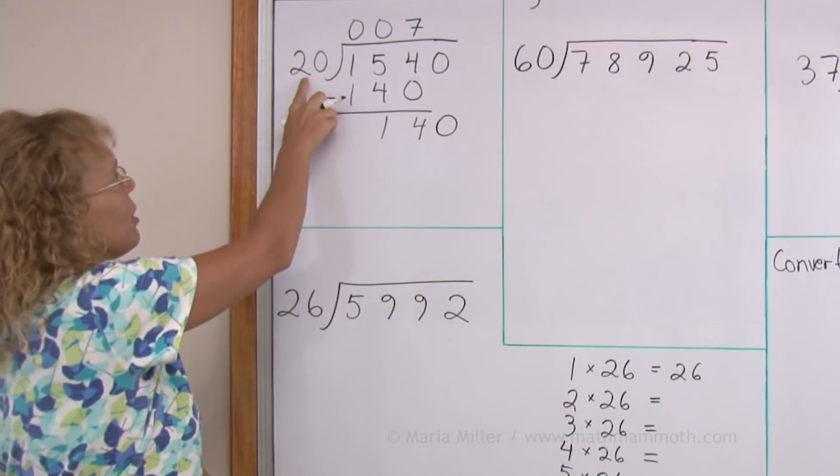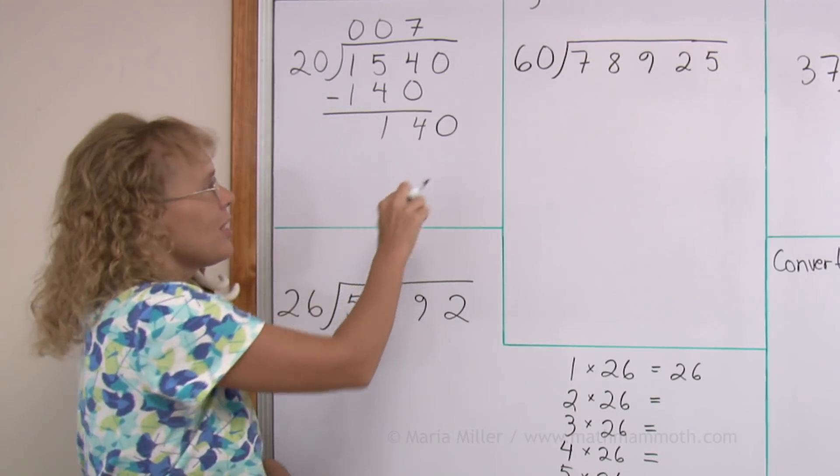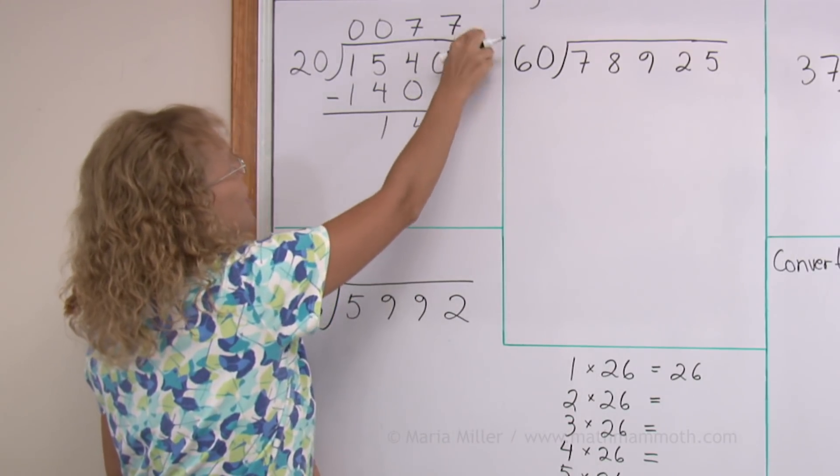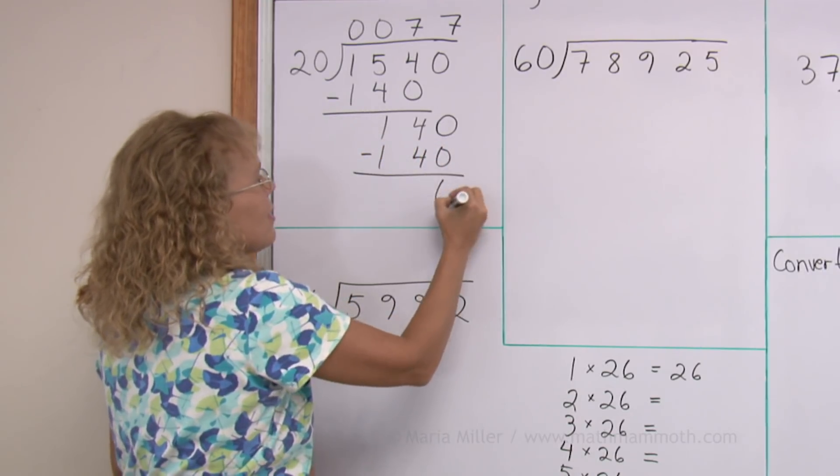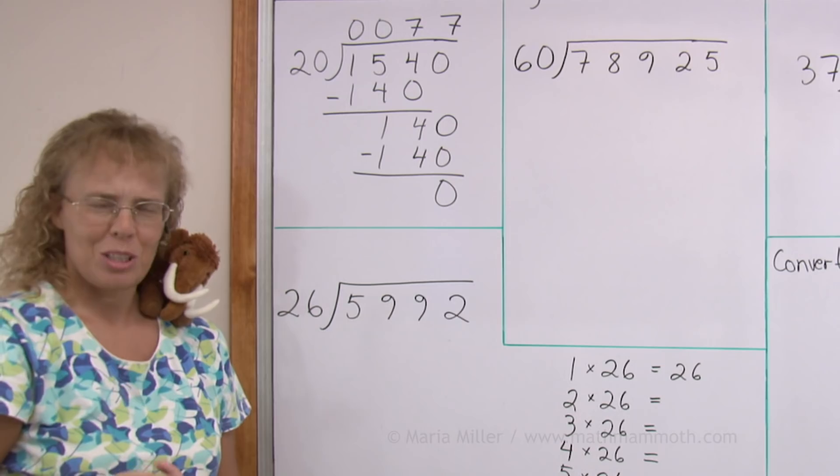And now, 20 goes into 140 exactly 7 times. So, 7 here. Multiply. 140. Subtract. And we're done. So, that was easy, right?